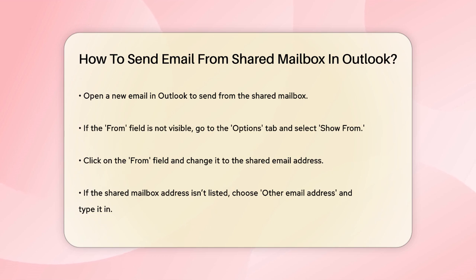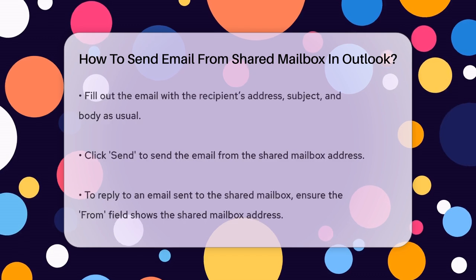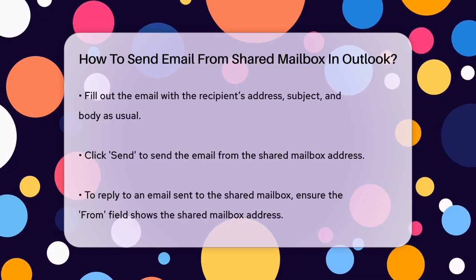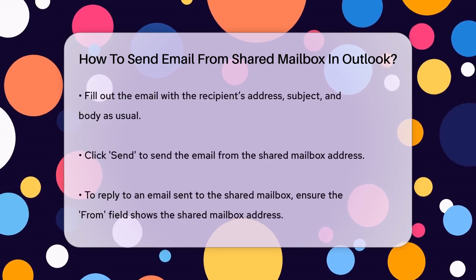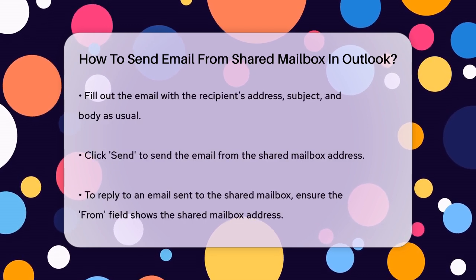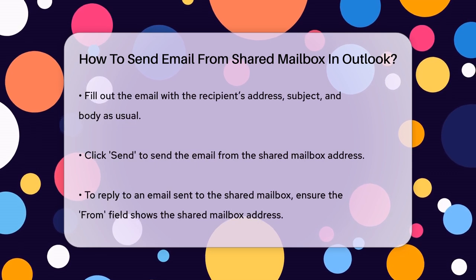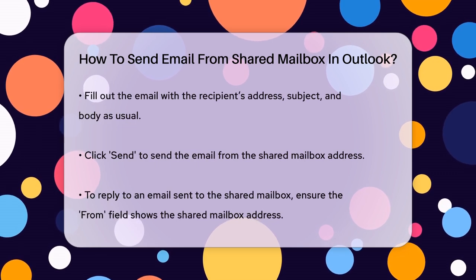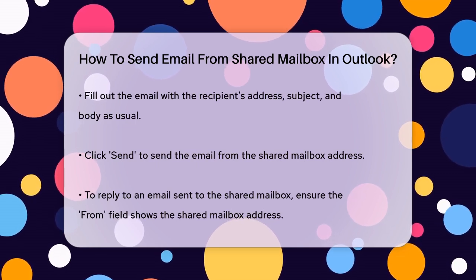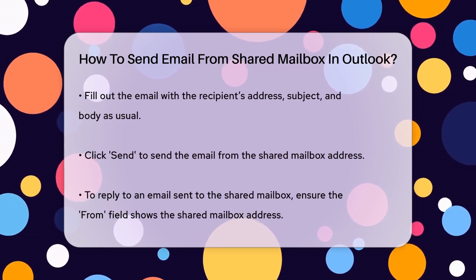Once you've selected the shared mailbox address, fill out the rest of the email as you normally would, including the recipient's email in the To field, a subject, and the body of the message. When you're ready, click Send. The email will be sent from the shared mailbox address, so your recipients will only see that address.